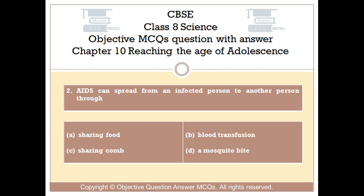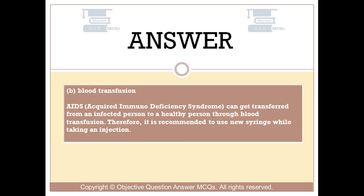The right answer is Option B: blood transfusion. AIDS, acquired immunodeficiency syndrome, can get transferred from an infected person to a healthy person through blood transfusion. Therefore, it is recommended to use a new syringe while taking an injection.